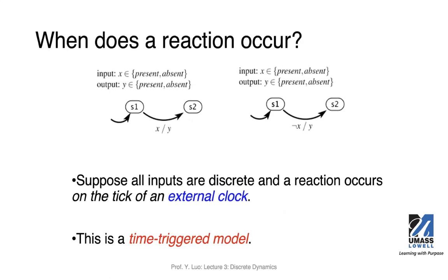A student asked: are time-triggered models more practical in general, or are there cases when event-triggered models are more practical? If an event is very rare, it makes sense to use an event-triggered model, because you may waste a lot of energy checking that condition every clock cycle.